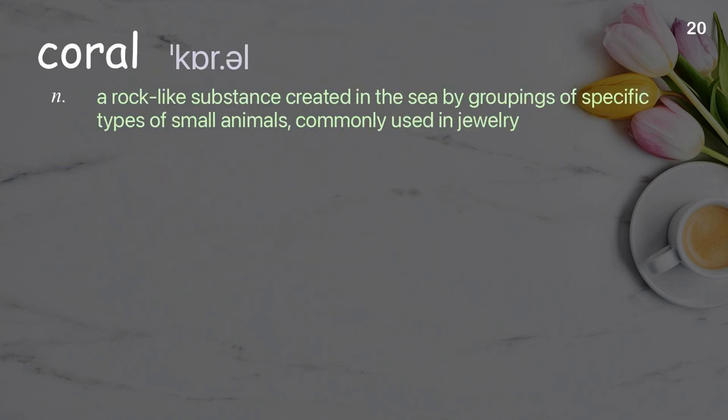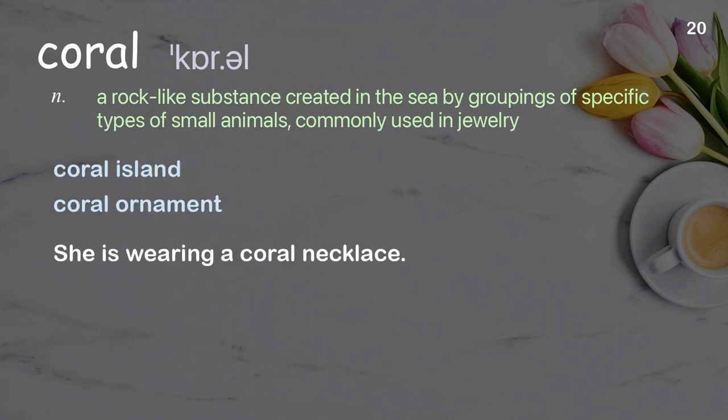Coral. A rock-like substance created in the sea by groupings of specific types of small animals, commonly used in jewelry. Examples: coral island, coral ornament. She is wearing a coral necklace.